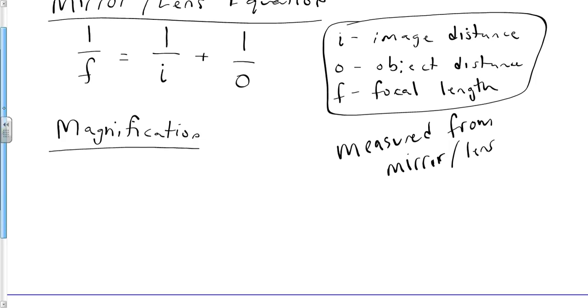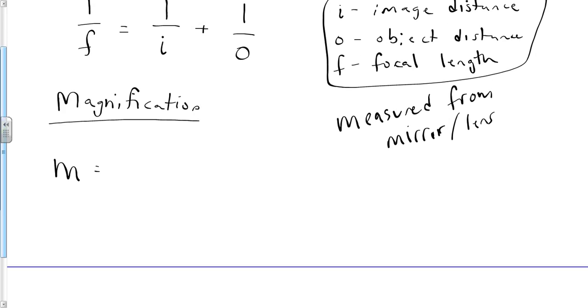The magnification equation is negative i over o. Also, magnification is the height of the image over the height of the object. That one is more logical.